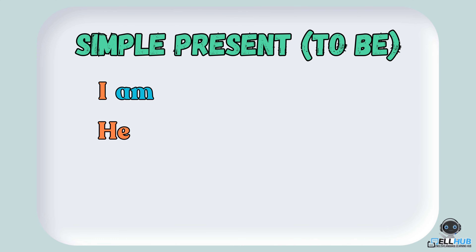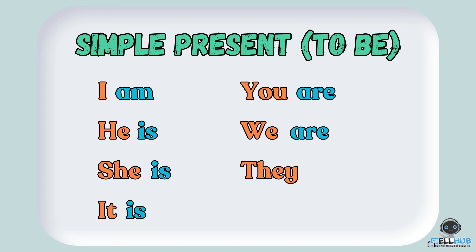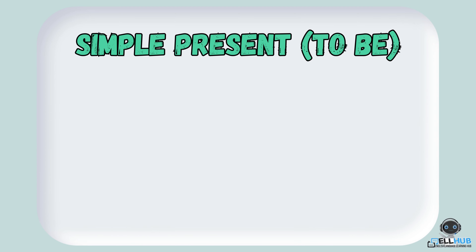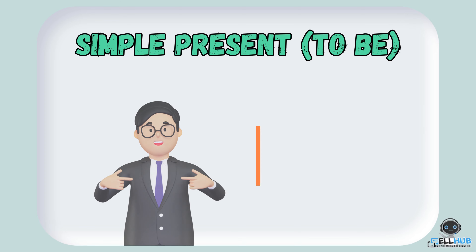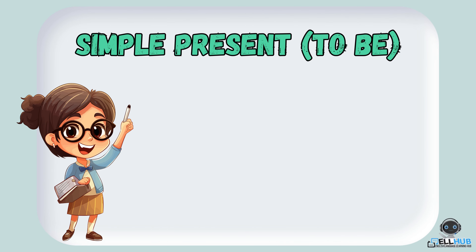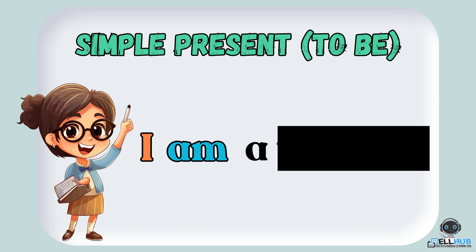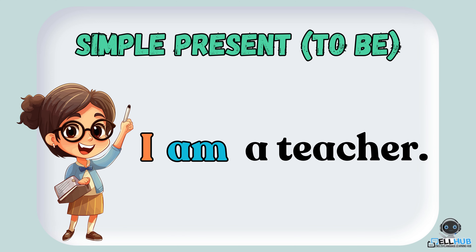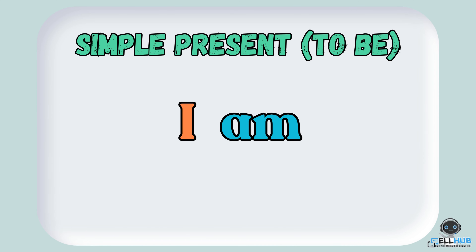Verb be has different forms depending on the subject of the sentence — it's all about subject-verb agreement. When the subject is I, we use am. For example: I am a teacher. But in everyday conversation, we often use the contraction I'm, like I'm a teacher.